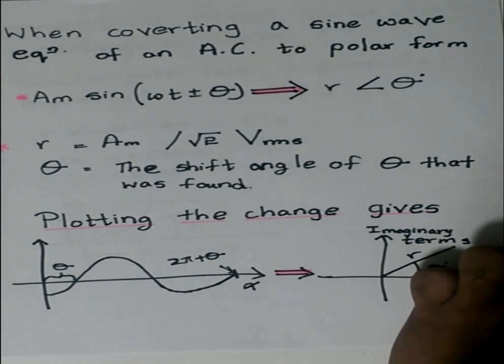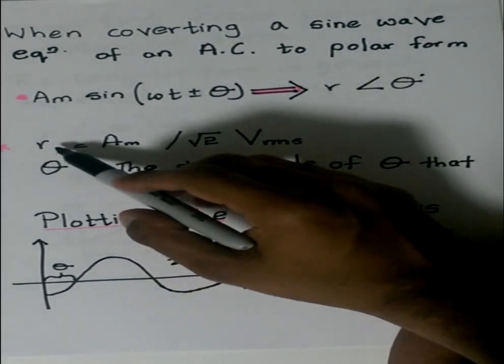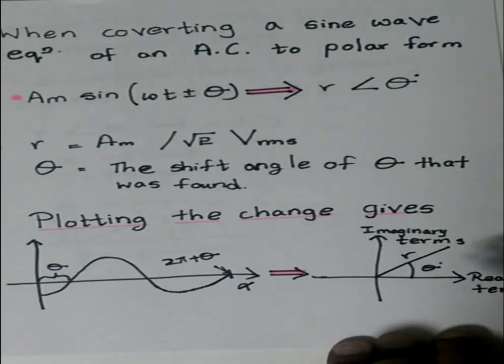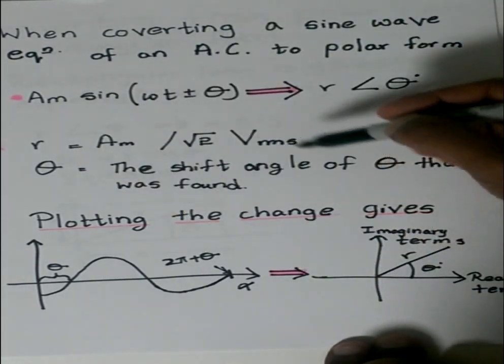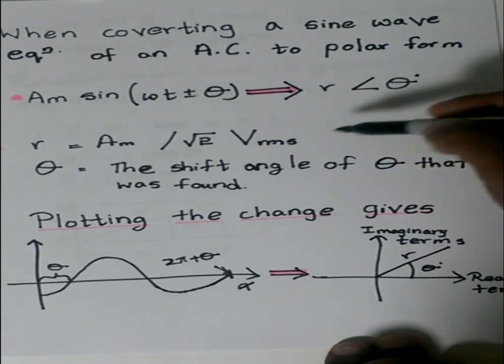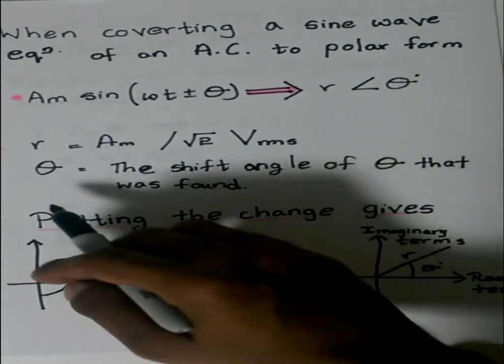The only thing we will need to know is that the length r of a sine wave is basically the amplitude, or root two times the root mean squared of the voltage, and θ is the shift of the angle. This θ is the same as this θ.